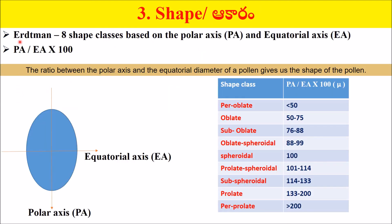Erdtman classified pollen grains into 8 shapes based on polar axis and equatorial axis. The ratio between the polar axis and the equatorial diameter of pollen gives the shape of the pollen — polar axis divided by equatorial axis multiplied by 100. Shapes include: per oblate, sub oblate, oblate spheroidal, prolate spheroidal, sub spheroidal, prolate, and per prolate.